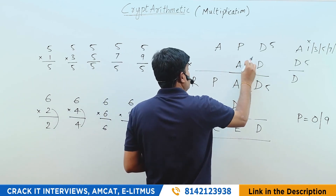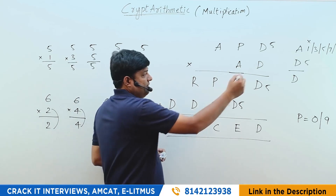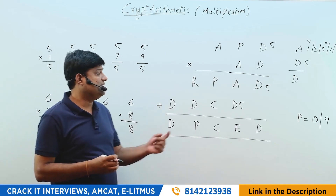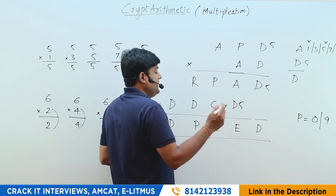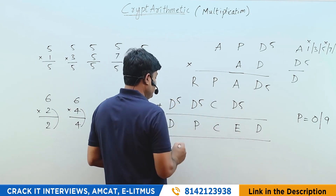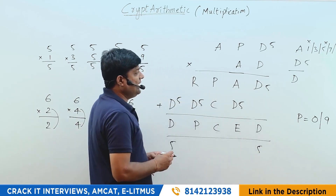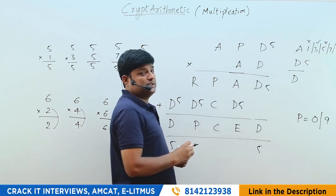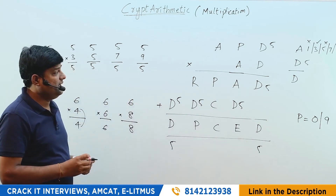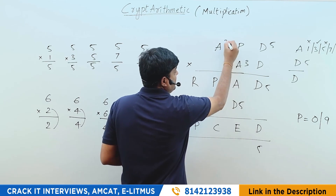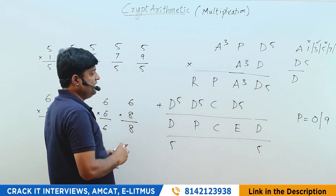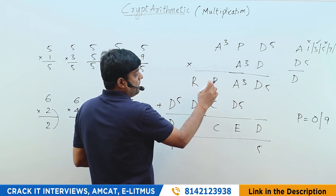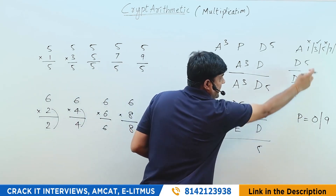We can rule out A=5 since D=5. Now let's substitute D=5 everywhere. Next, try A=3. If A=3, let's also try P=0 first. So we put A=3 and P=0 throughout the problem and check if everything matches.